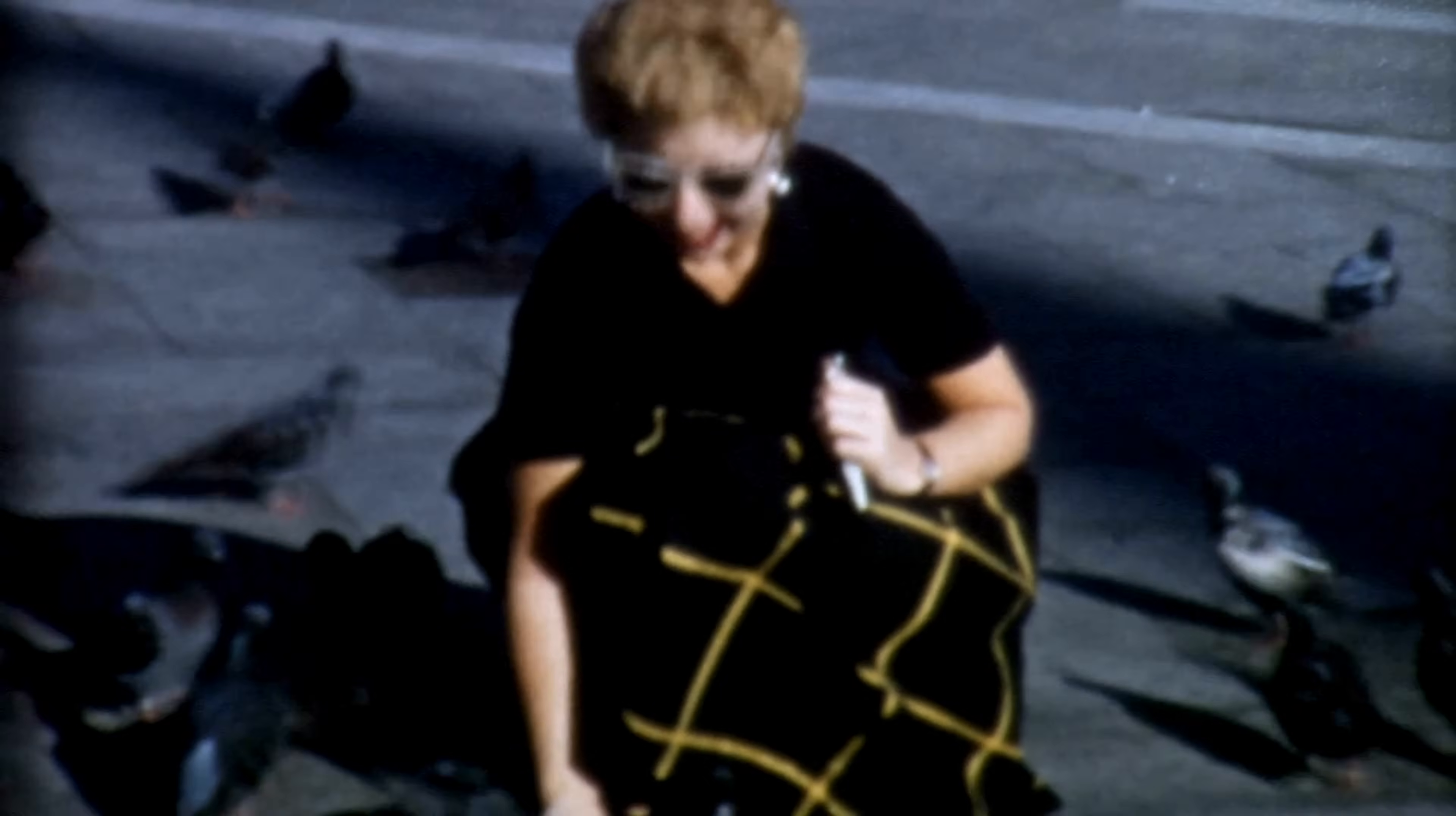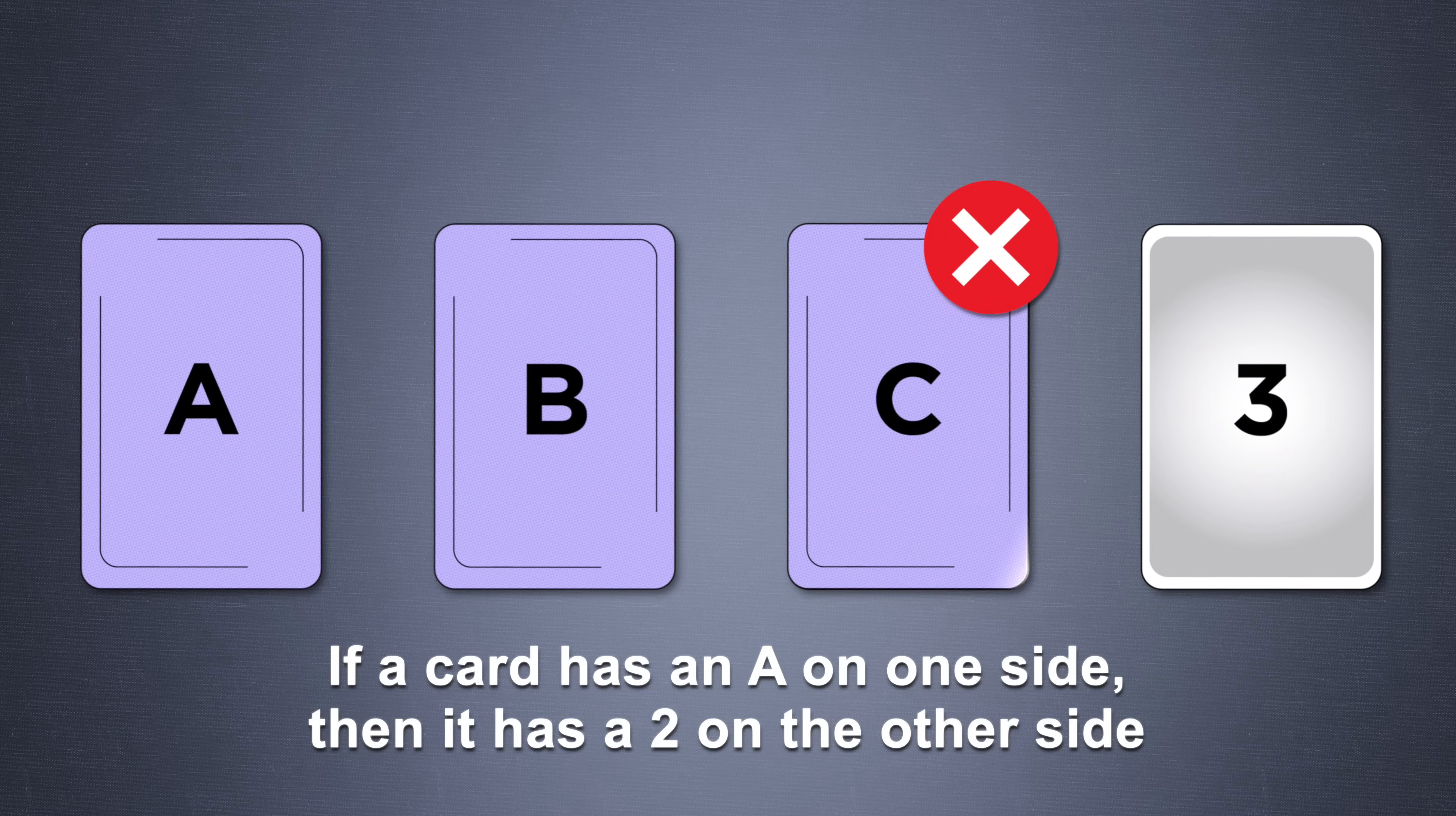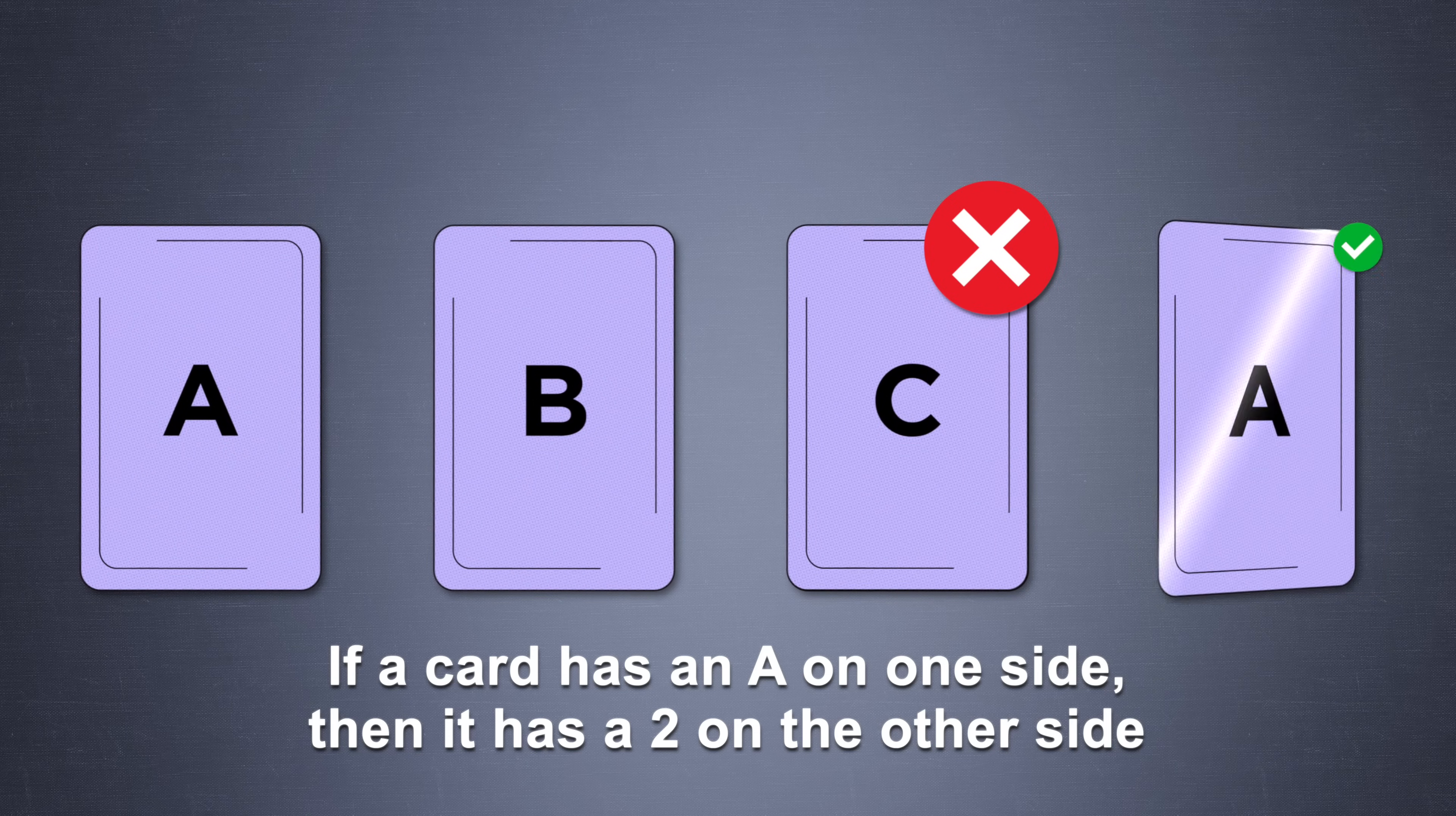The prevailing belief at the time in cognitive psychology was that humans are inherently rational beings. Wason's work shattered that assumption, revealing how people often fail to reason logically, even in seemingly simple situations.